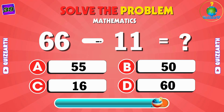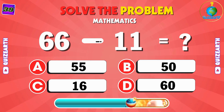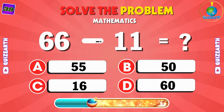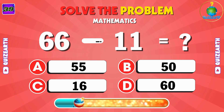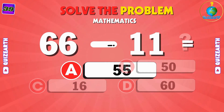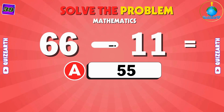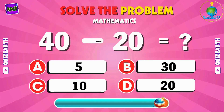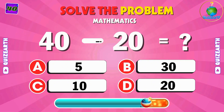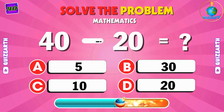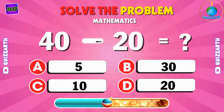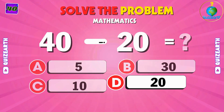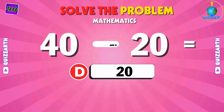Take away 11 from 66 — what remains? A: 55. Subtract 20 from 40 — can you do it? D: 20.